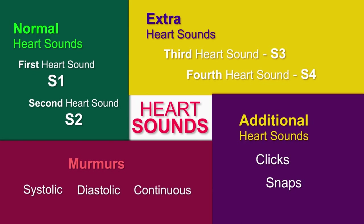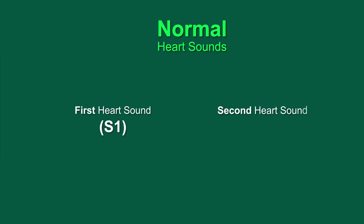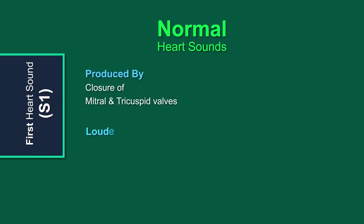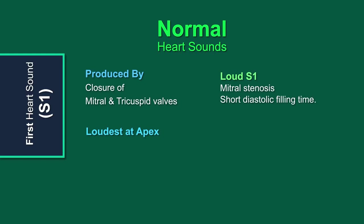Let's explore each category one by one. First, normal heart sounds, which include S1 and S2. S1 is produced by the closure of the mitral and tricuspid valves and is best heard at the cardiac apex.